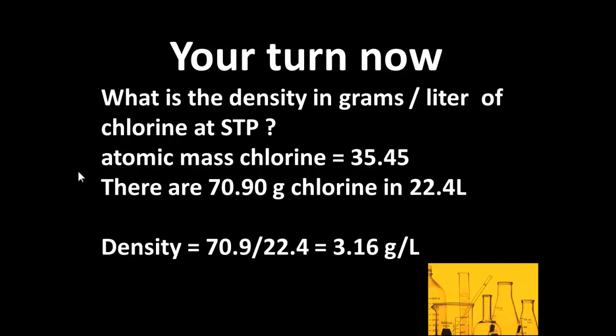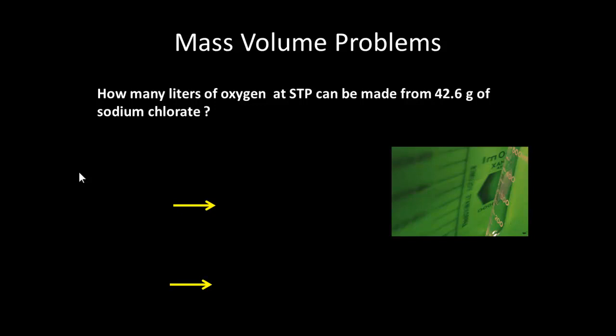So to get the density, I simply divide the 70.9 grams by the 22.4 liters to give me an answer of 3.16 grams per liter.